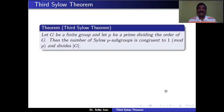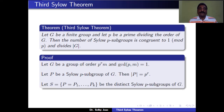Let us see the proof of this theorem. We assume G is a group of order P^r * M, where P does not divide M — that means P and M are coprime. Let P be a Sylow P-subgroup of G, so the order of P is equal to P^r.